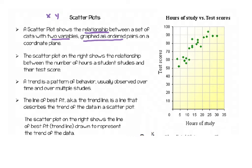The scatterplot about hours of study versus test scores shows the relationship between how many hours a student studies and their test score. If a student studies five hours, their test score is probably somewhere around 55. As they study more — say 20 hours — their test scores are a little bit higher. We can count the points on the scatter plot to find out approximately how many students were asked.